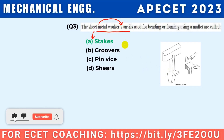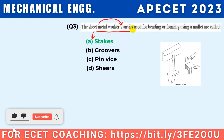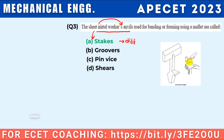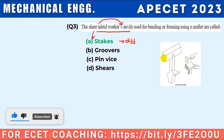What is a sheet metal worker's anvil? The answer is stakes. For the forging shop we use the anvil, but the sheet metal worker's anvil is called a stake. There are different types of stakes used when working with sheet metal.